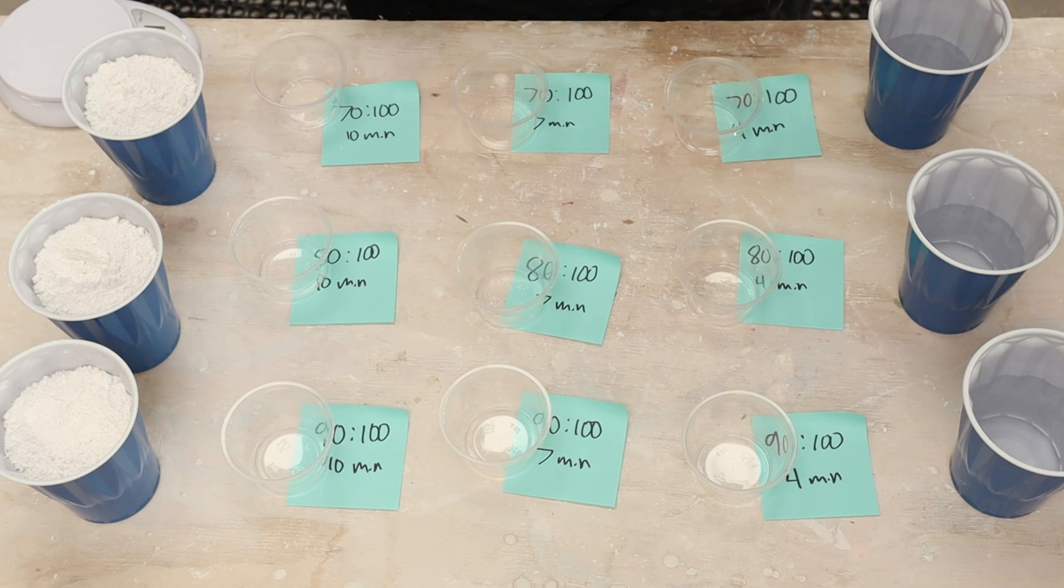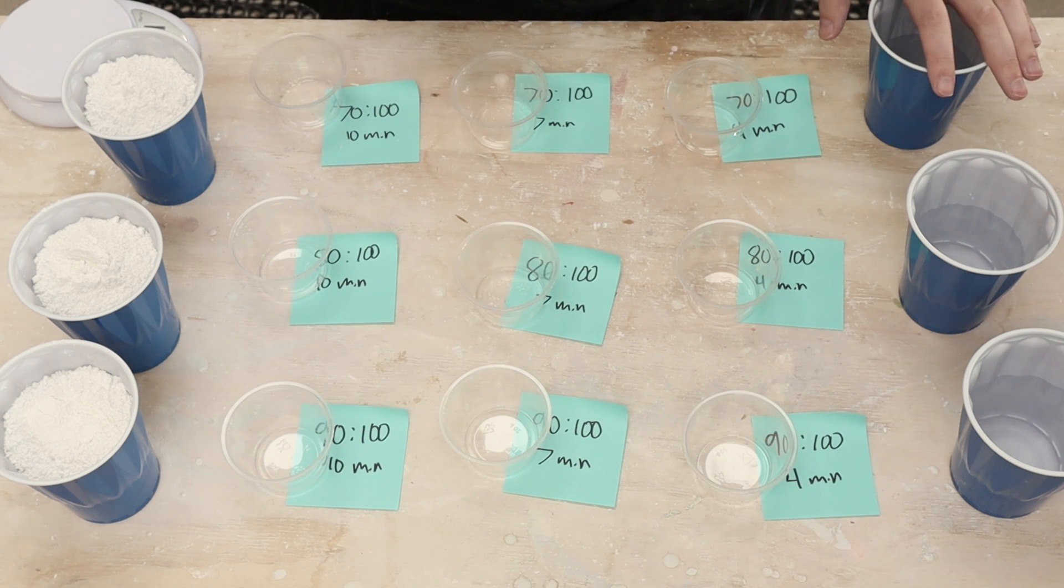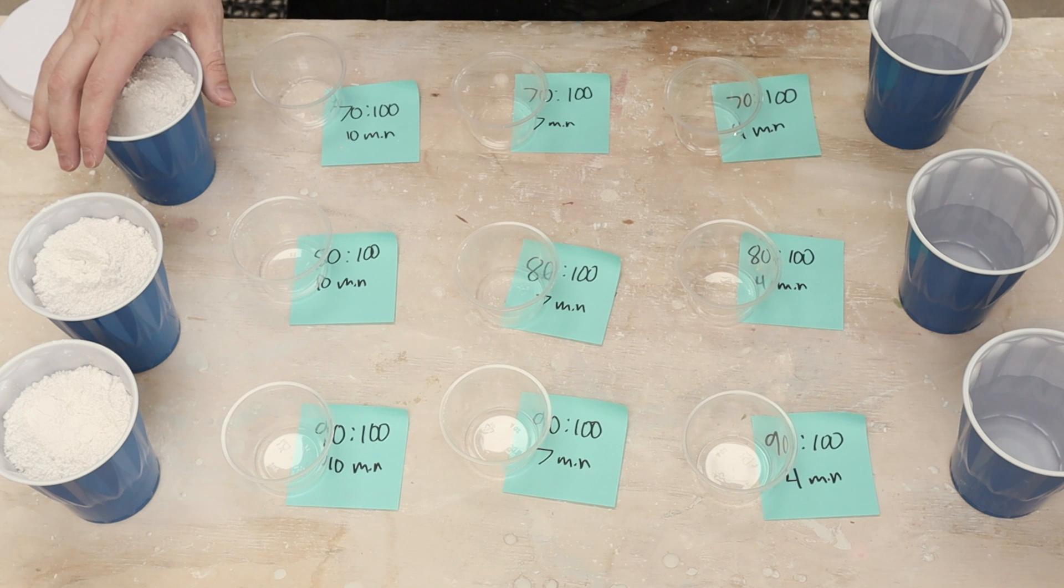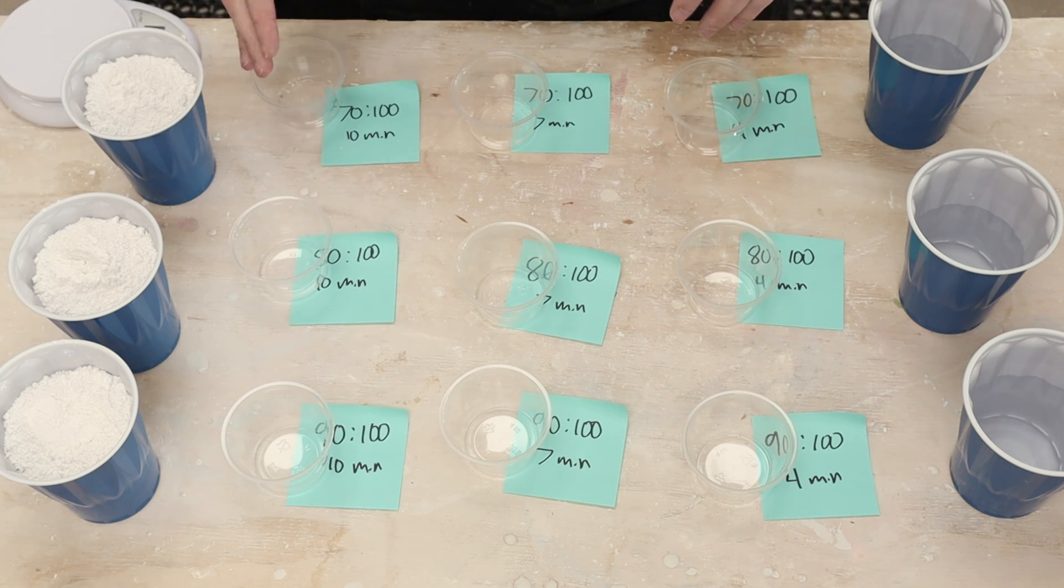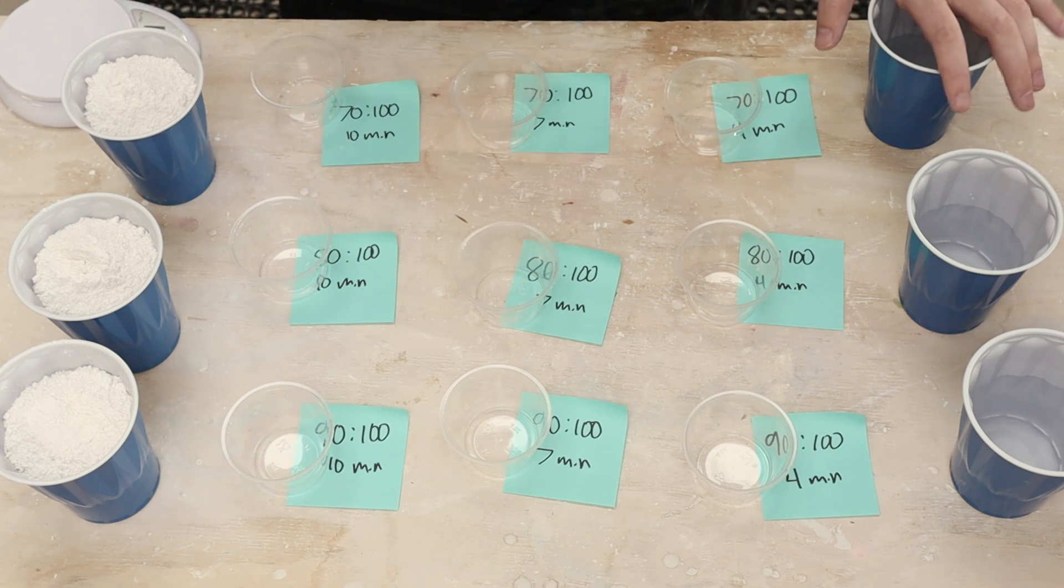Okay, I've got everything laid out here. So I've got a row for 70 grams of water, which I've measured out, to 100 grams of plaster, that ratio. I'm actually doing three batches that have three columns. So this is actually 300 grams of plaster and 210 grams of water. And I just measured all that up on my scale.